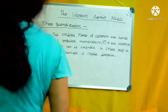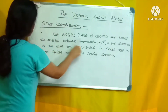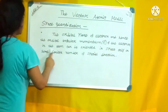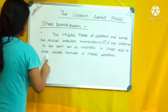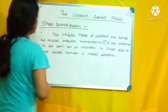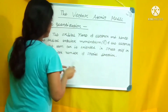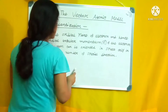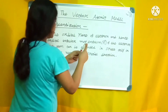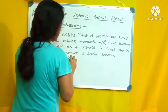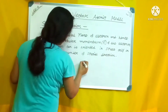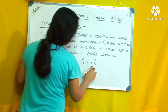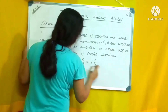We'll discuss space quantization. The orbital plane of the electron, and hence the orbital angular momentum of the electron in the atom, can be oriented in space only in a limited number of spatial directions. That means the angular momentum will be directed only in certain spatial directions — it cannot be randomly directed in any direction.